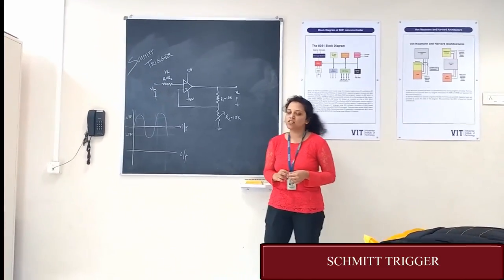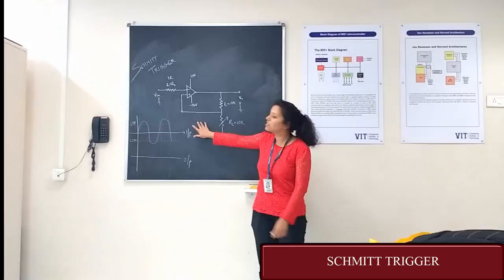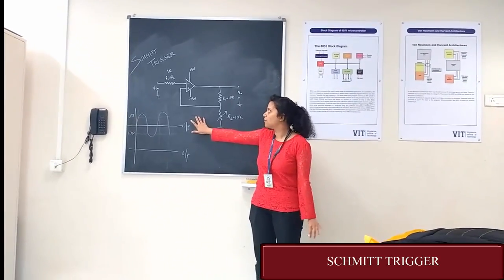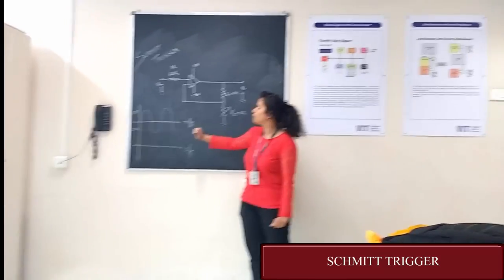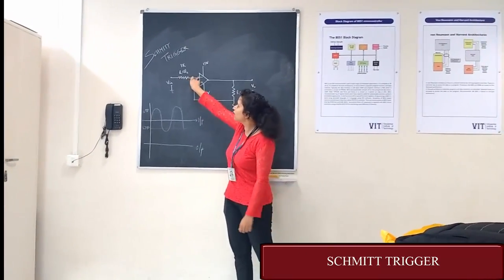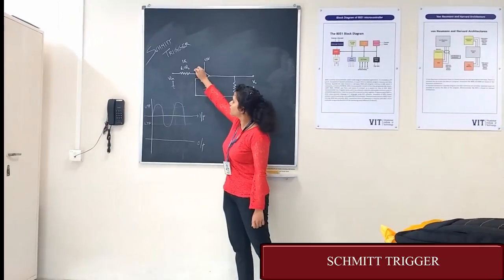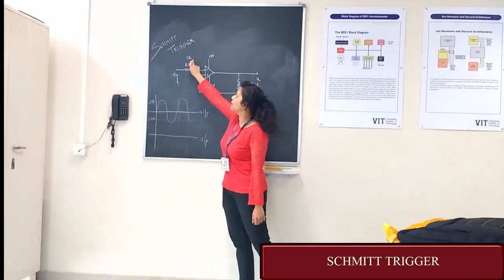Today's experiment is based on Schmitt trigger. This is a circuit diagram of Schmitt trigger. Here we are using IC741 as an operational amplifier. Input is given at the inverting terminal which is pin 2, and the value of the resistor is 1K.